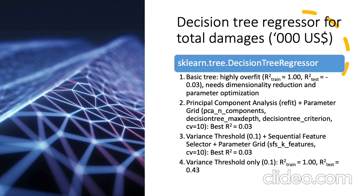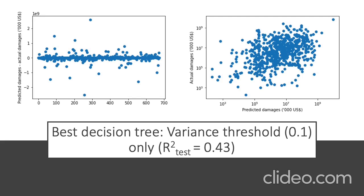Finally, we tried a really simple tree using only the variance threshold. It fit the training value pretty well and actually fit the test value not too bad either, at 0.43. That's not a great score, but looking at it graphically, the residuals tend to line up near 0, so we're getting somewhat close to the true value. On a predicted vs. actual damages plot, while there's quite a bit of variance, there's still a tendency to line up along the diagonal, meaning we have actually picked out some signal in the data.